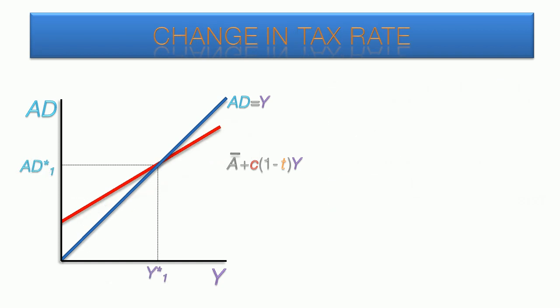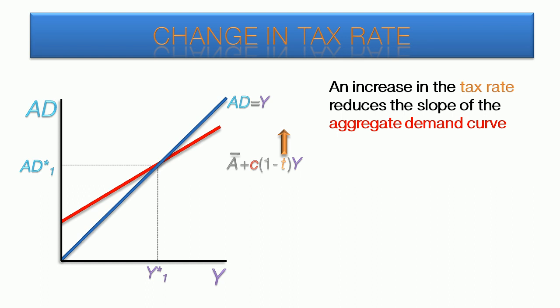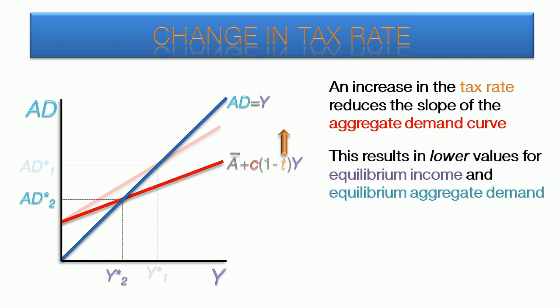Now we are going to examine the effects of change in the tax rate. An increase in the tax rate reduces the slope of the aggregate demand curve. This results in lower values for equilibrium income and equilibrium aggregate demand.